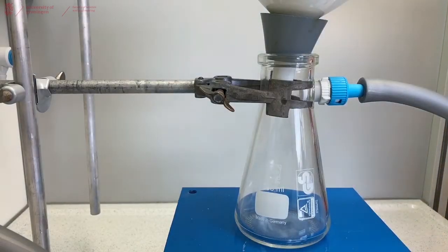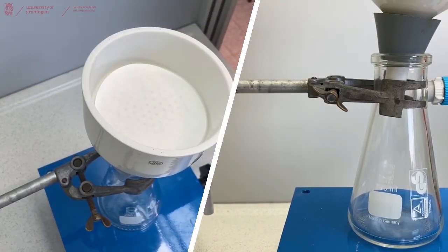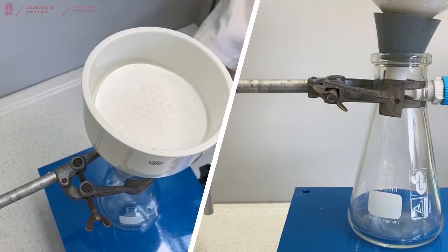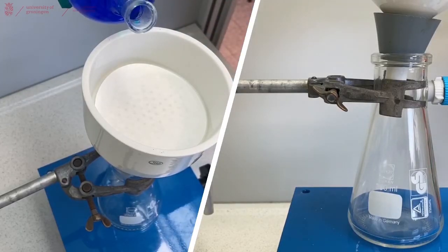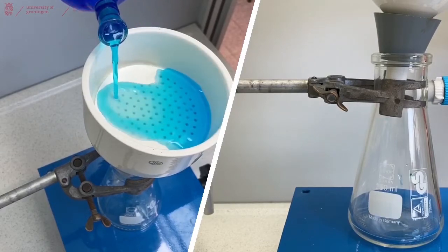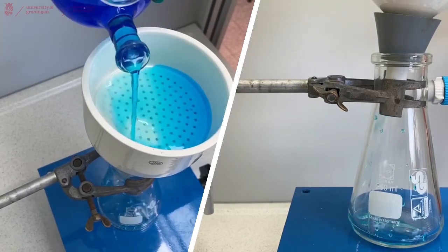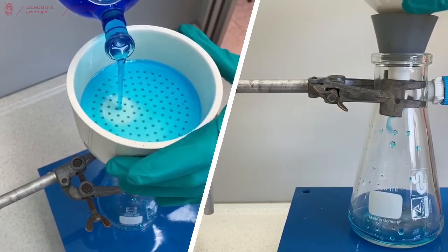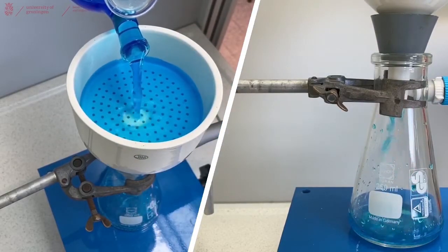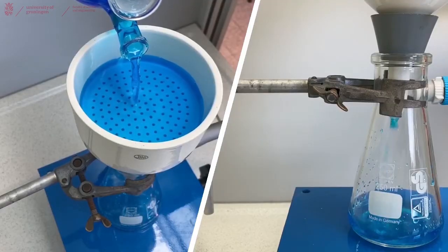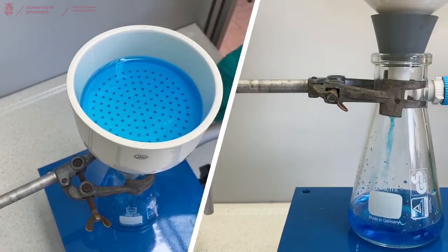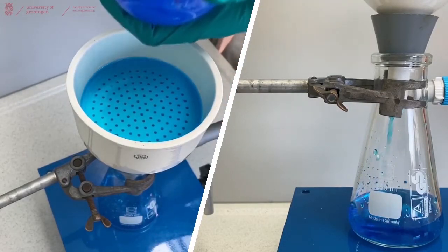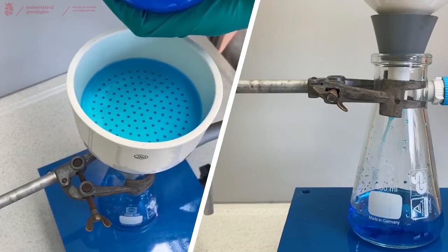You should hear a small flow of air, and then you can pour your solids with its liquid on top of the filtration. Make sure to do this carefully so that none of the solids can actually go underneath your filter paper. I already noticed now that these solids are very stuck in my flask, so I'll use my spatula to release them.